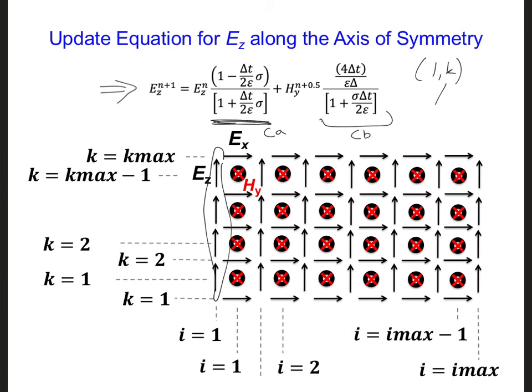So the indices for EZ over which we want to implement this equation is 1 comma k, for k ranging from 1 to k max minus 1, since those are the indices of our EZ components.